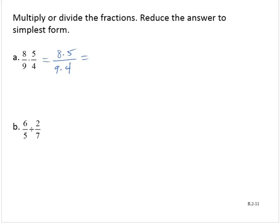Notice that 8 and 4 have a common factor of 4. So 8 is 2 times 4 times 5, and 9 is still 9 times 4. I rewrote that 8 as 2 times 4. But now, it allows me to remove the common factor of 4 between the numerator and denominator, and simplify as 10 over 9.